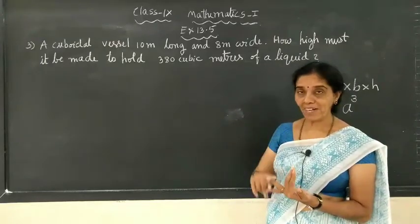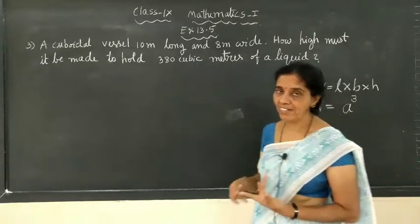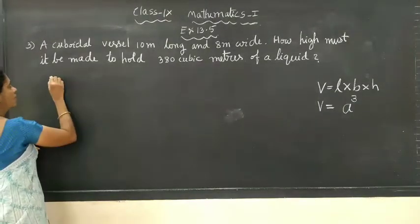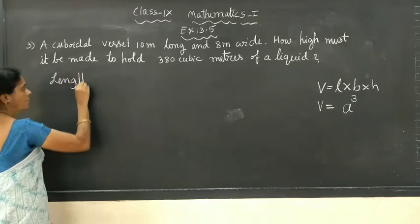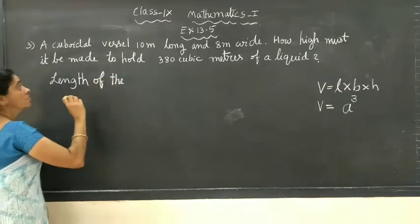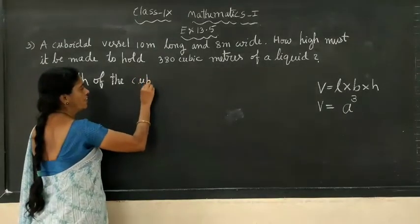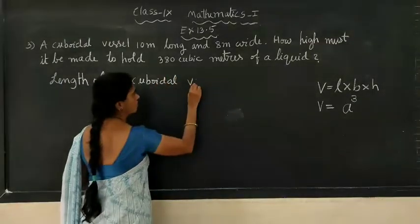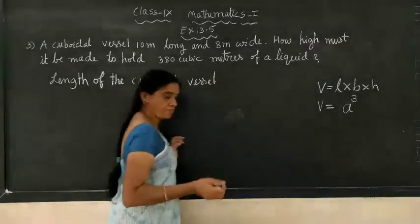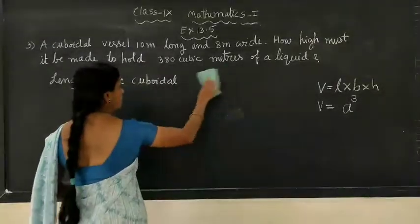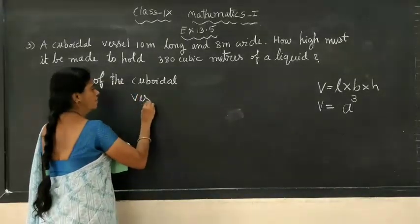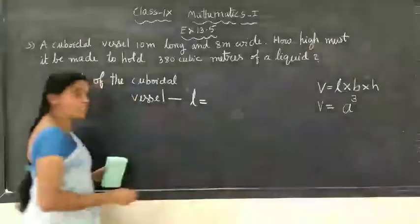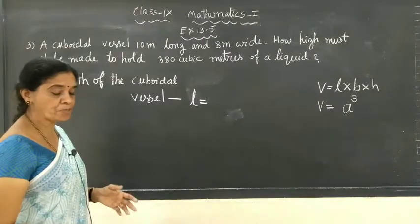Our work is to find the height of that vessel. Length is given, breadth is given, volume also given — we have to find the height. So what are the given values? We have to write in the statement form. Length of the cuboidal vessel — I will write it here, we need space to work out.